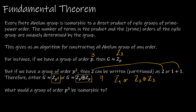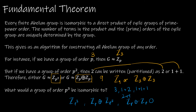So what about P cubed? What could that be isomorphic to? We start by looking at how many ways we can partition three. Three can be three, or one plus two — which is the same as two plus one, since those would be isomorphic to one another — or one plus one plus one. So those are the options: either Z P cubed, Z P cross Z P squared, or Z P cross Z P cross Z P.